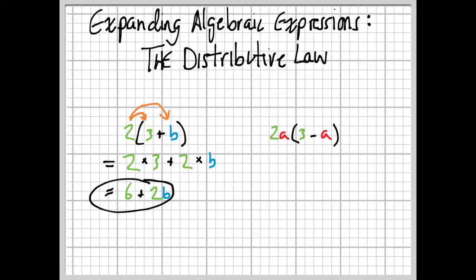Let's look at another example. 2a times the quantity 3 minus a. So, this time we're going to take the 2a and multiply it by 3 and multiply it by a. So, we have 2a times 3, and then minus, since there's a minus here, 2a times a.